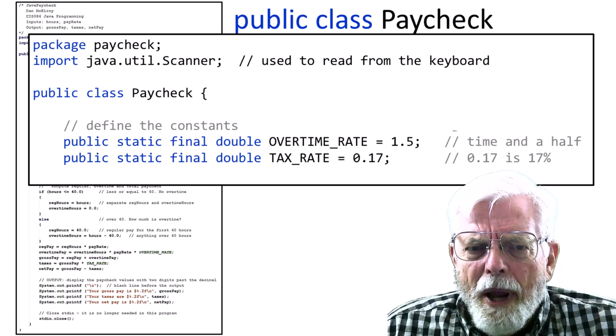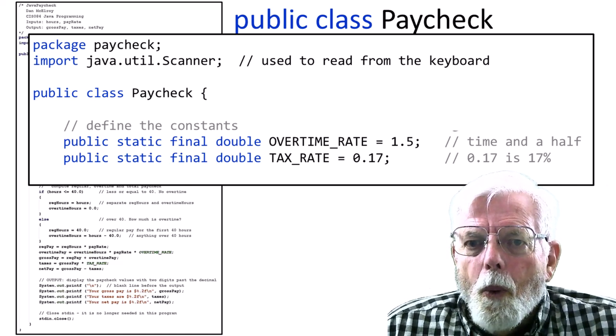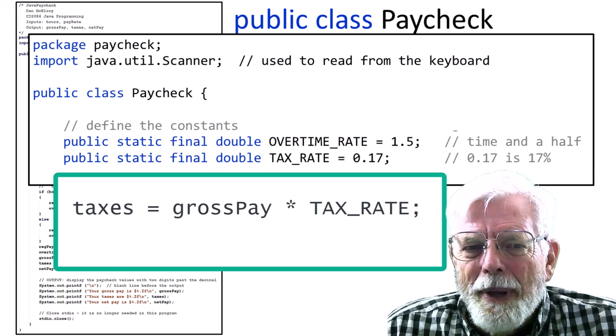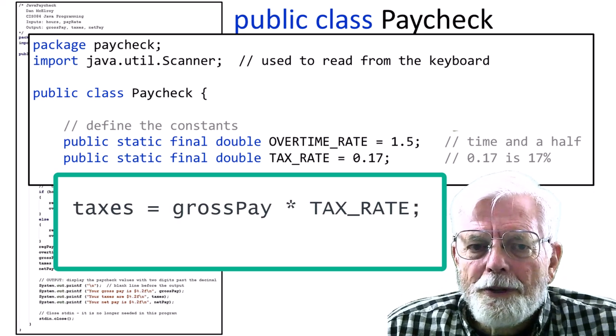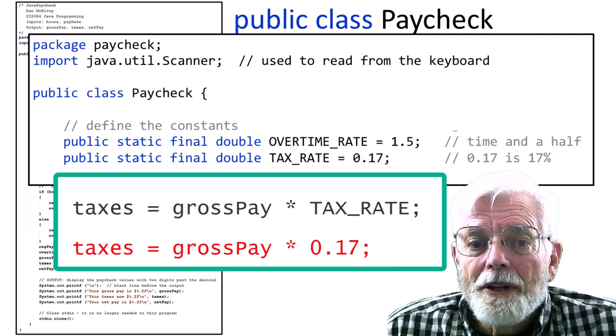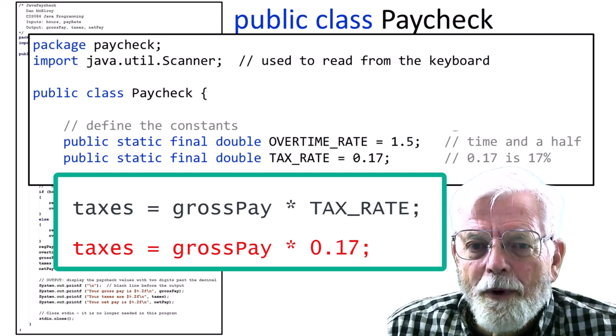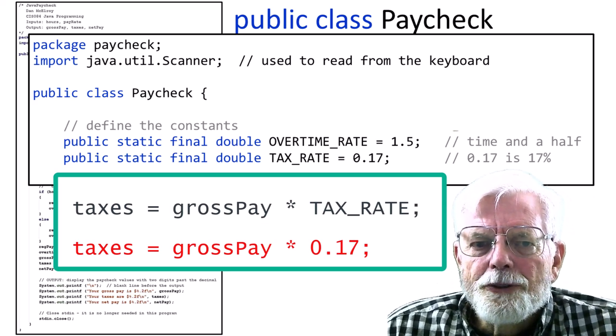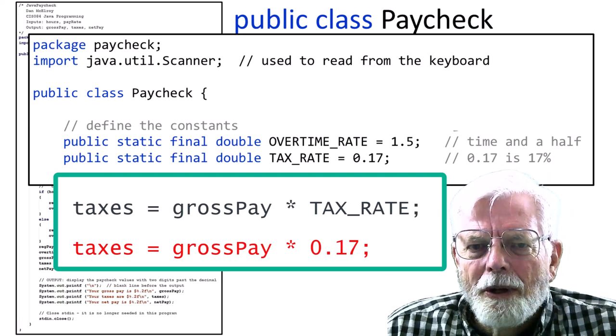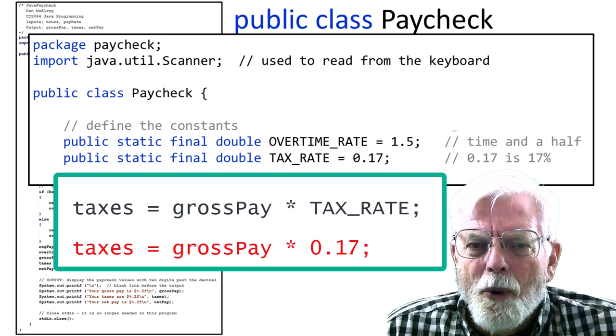Constants are used later in the program so that the values will have a name instead of just a number. For example, when tax rate is used in the expression, taxes equal gross pay times tax rate semicolon, it is much better than taxes equal gross pay times 0.17 semicolon because someone else looking at the program may wonder where the 0.17 came from and why it is there. If 0.17 were used, it would be referred to as a magic number. Who knows how it got there?